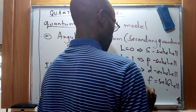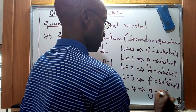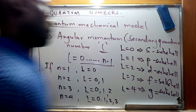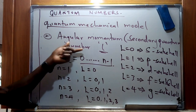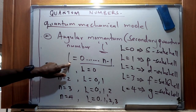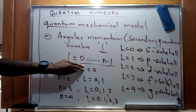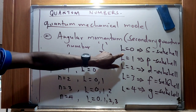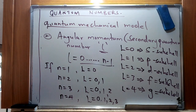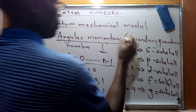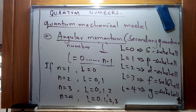Continuing, l equals 4 corresponds to the g subshell. So rather than using plain integers, we use these special names — s, p, d, f, g — to denote the subshells for the angular momentum quantum number. The third category we're going to look at is the magnetic quantum number.